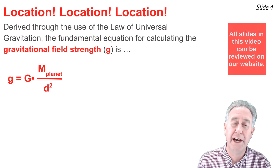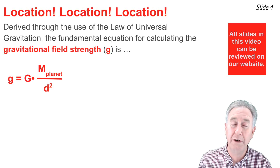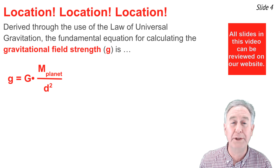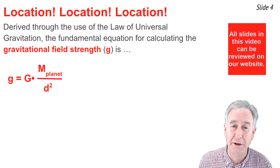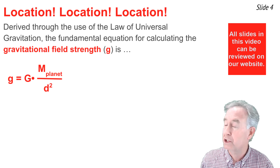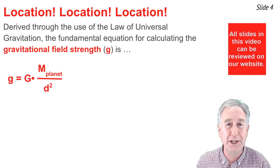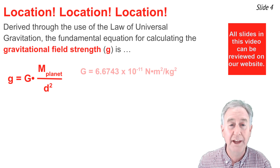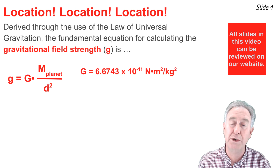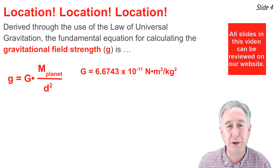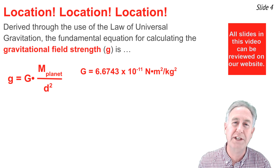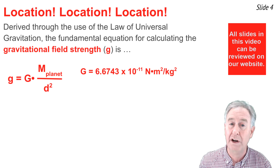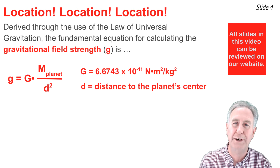The equation we derived comes from the law of universal gravitation, and as such it should be a universal equation applicable to any planet, not just Earth. We can rewrite it as: little g equals big G multiplied by the mass of the planet divided by the distance squared. Here, big G is the universal gravitation constant with a value of 6.6743 × 10⁻¹¹, and d is how far you are from the center of that planet.